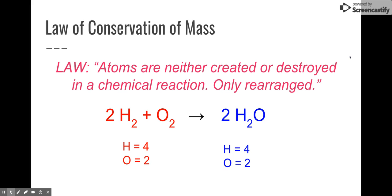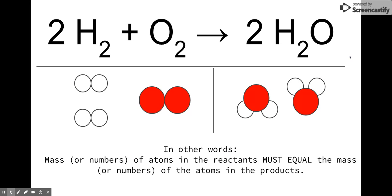Now here we have our reactants. Here we have hydrogen, two hydrogen molecules and one oxygen molecule. Now when those react, they create two water molecules. And notice that each side has the same numbers of particles. So that's basically it. The mass or the numbers of atoms in a reaction must equal the mass or the numbers of atoms in the product.